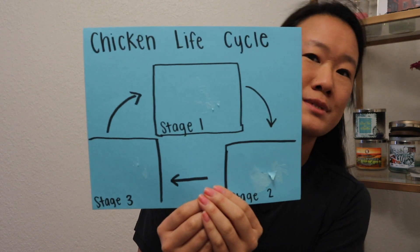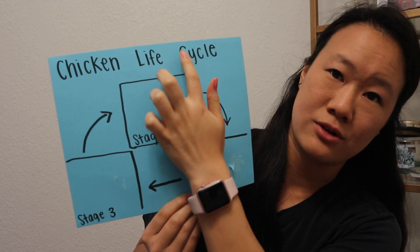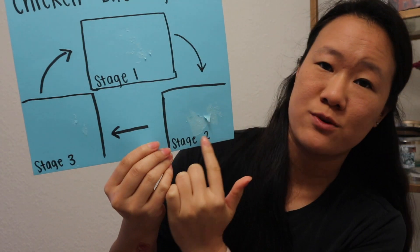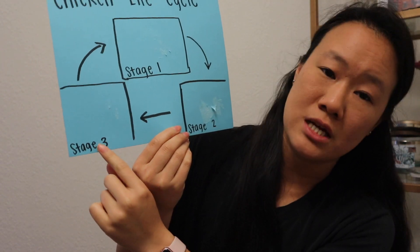Alright, now for today's activity, you will need a pencil and a paper. Go ahead and grab that right now. On your paper, I want you to go ahead and draw a cycle that looks like mine. The title will be Chicken Life Cycle, and you are going to have a square that says Stage 1, a square that says Stage 2, and then a square that says Stage 3.